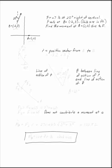F is a vector of 27 pounds at 20 degrees right of vertical. B is at (-2, 3). I want to know what the moment is at A, which is (1, 0).